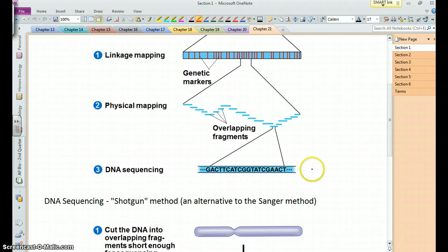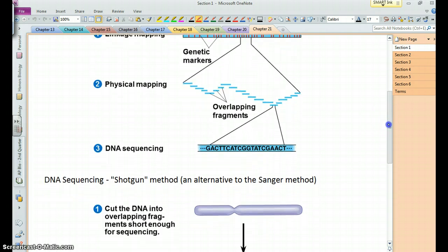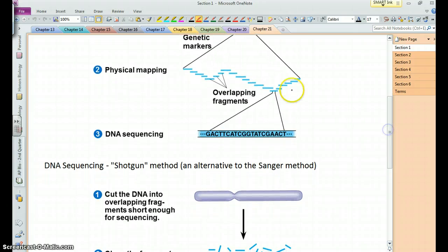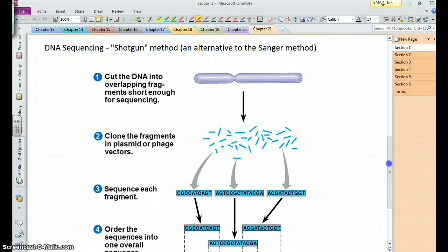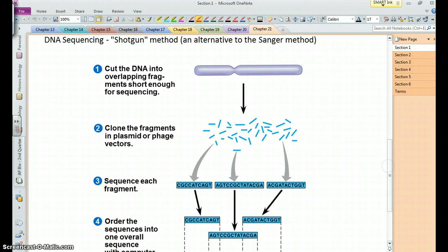This sequencing, we talked about the Sanger method, but another method is what's called the shotgun method, which is related to this physical mapping, in which you essentially can take a piece of DNA, a whole chromosome if you want, and you can use some restriction enzymes and just cut it into a bunch of pieces.